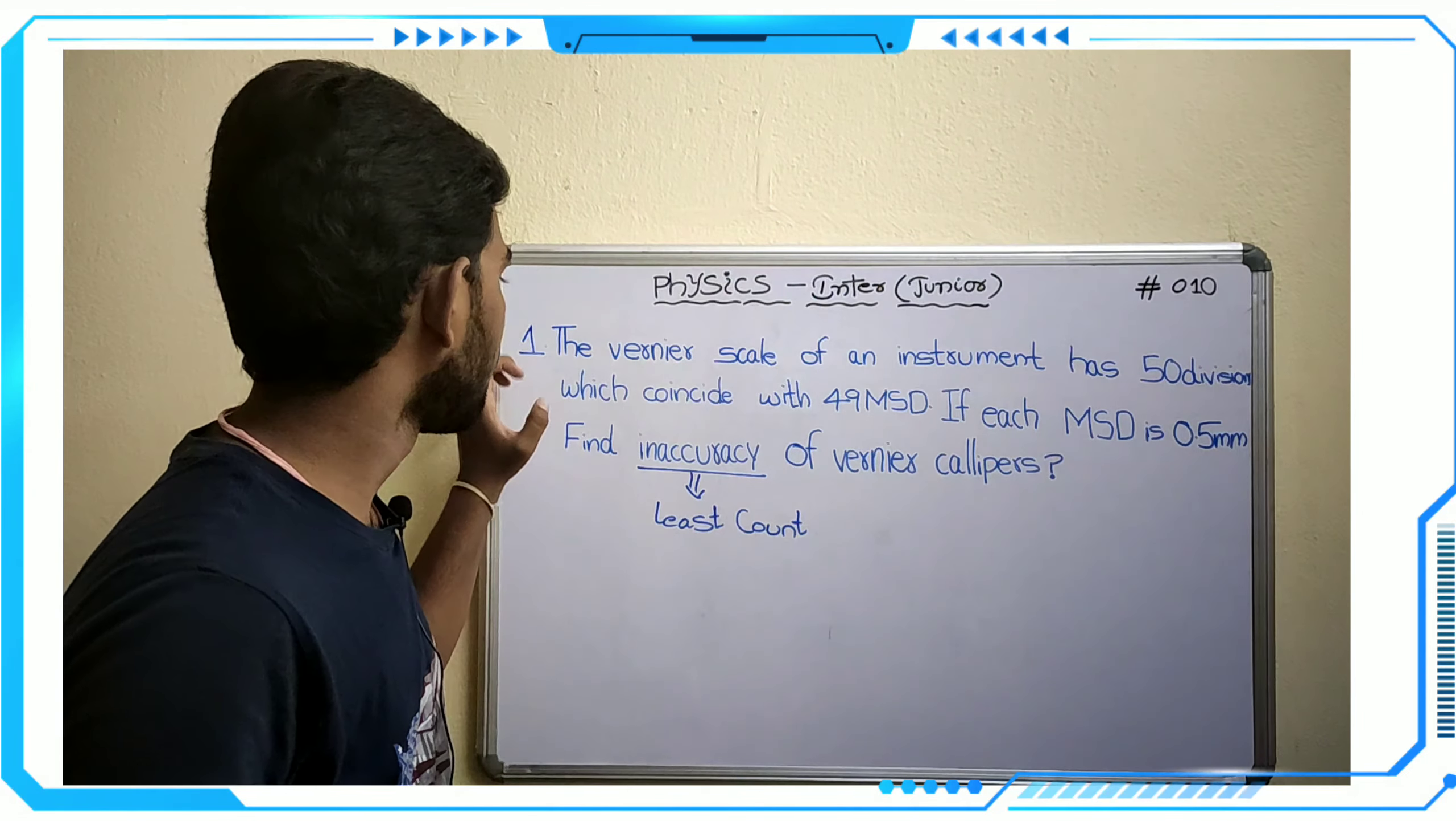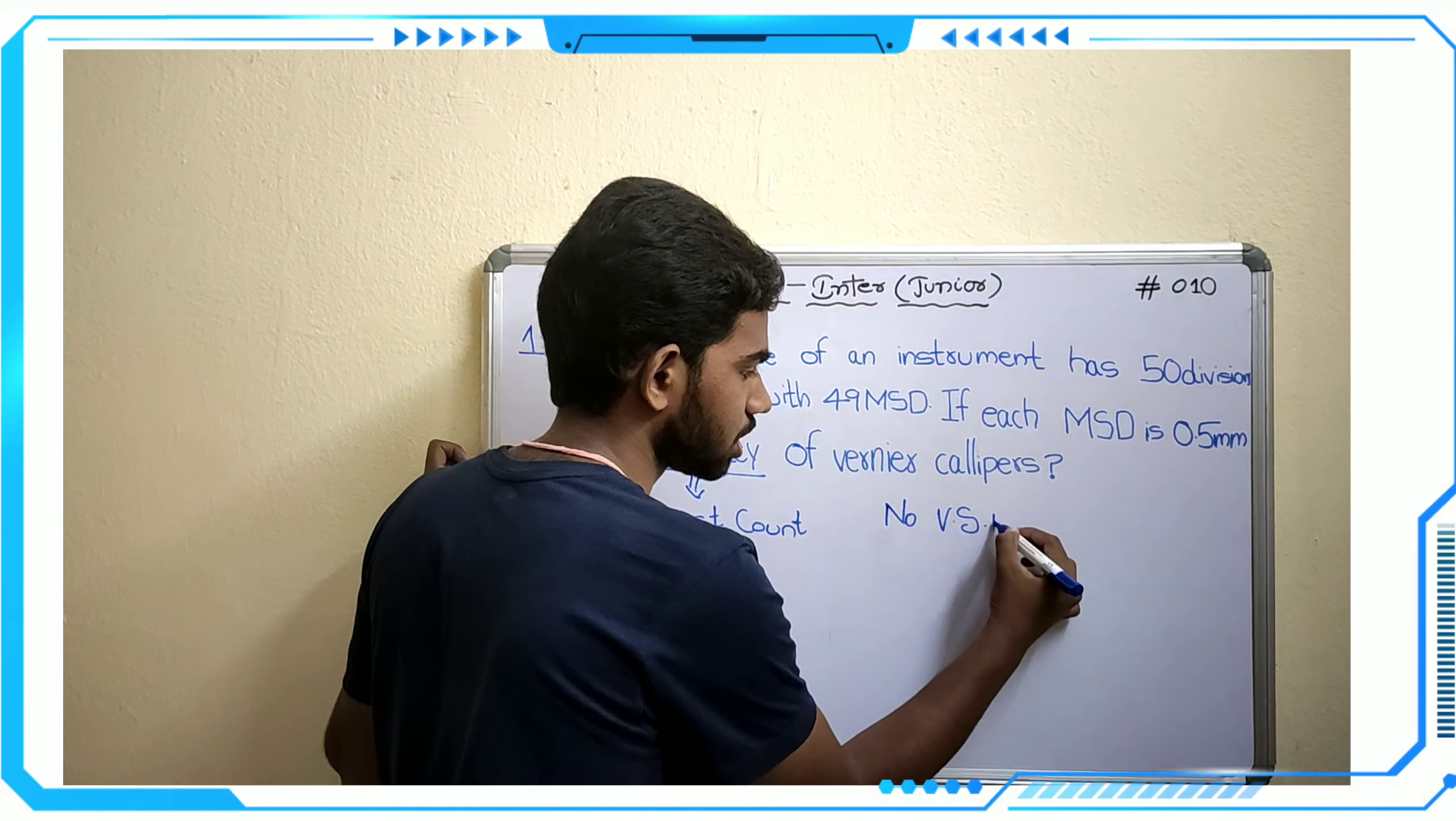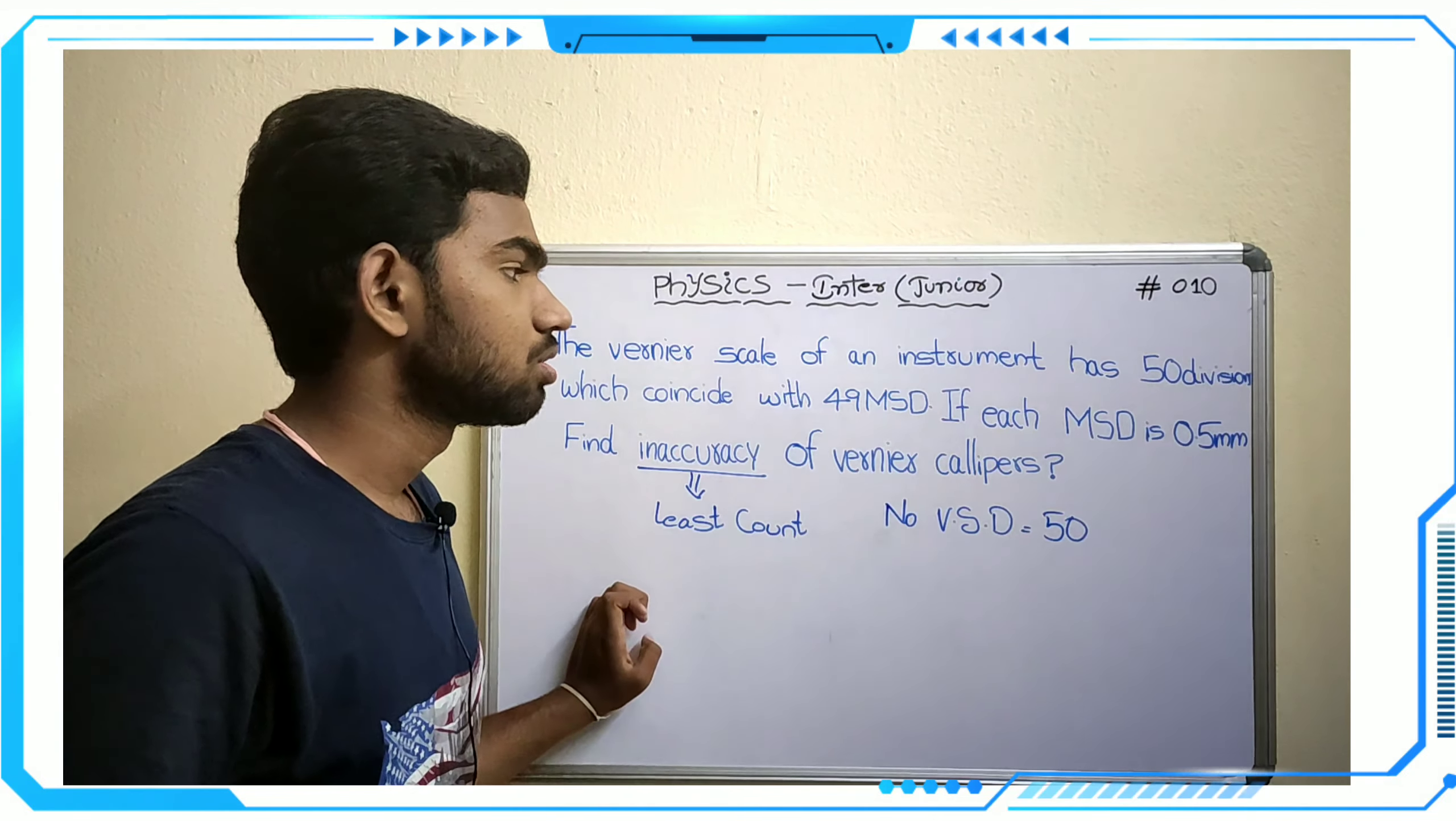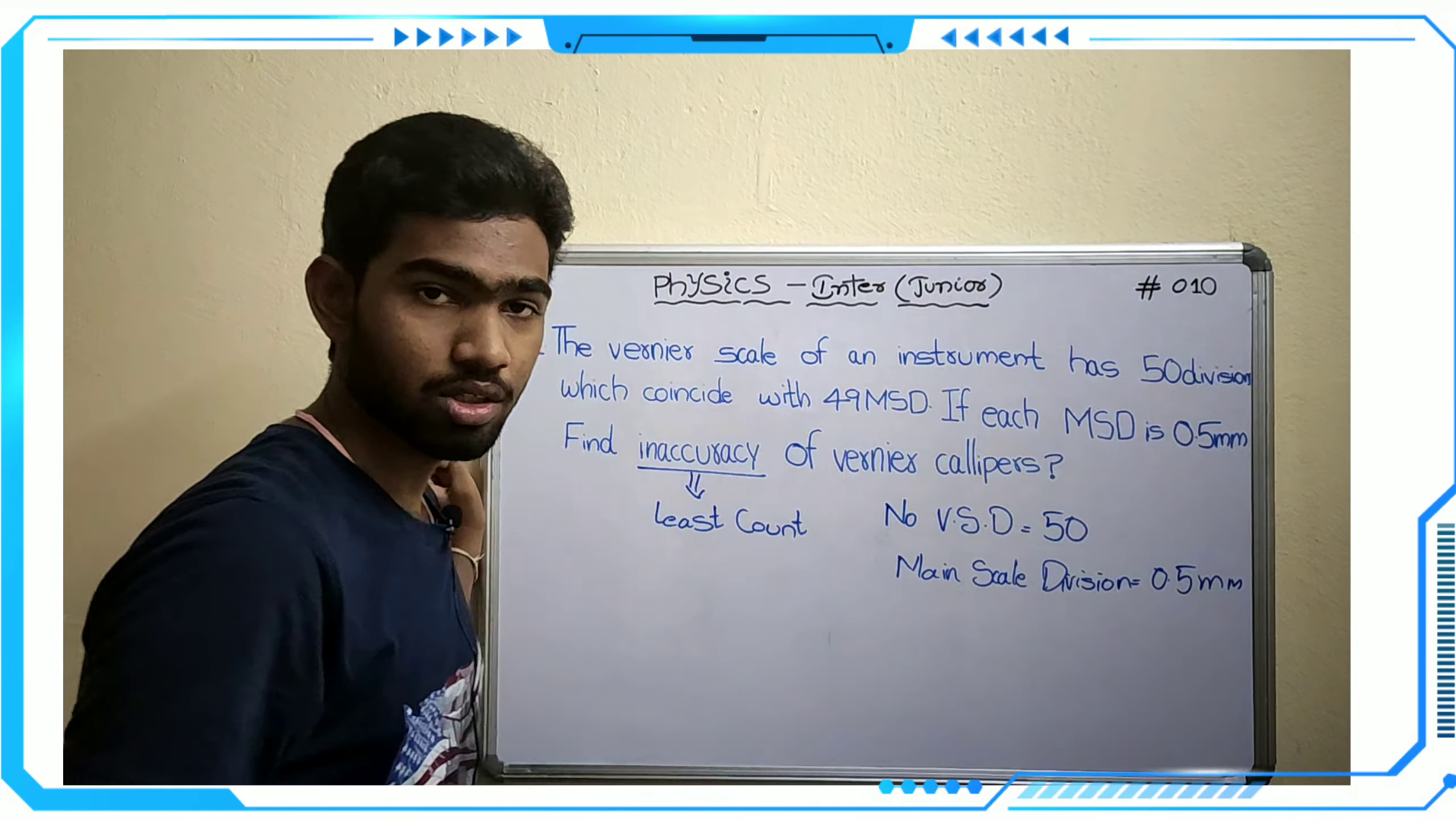We have to search for the required values. The vernier calipers scale has 50 divisions, so number of vernier scale divisions are 50. It coincides with 49 main scale divisions, and each MSD is 0.5 millimeters, so main scale division equals 0.5 millimeters.